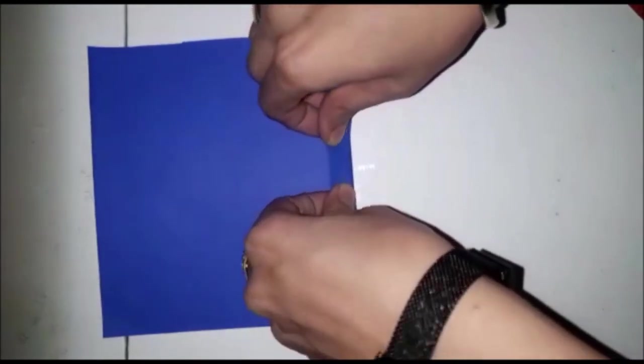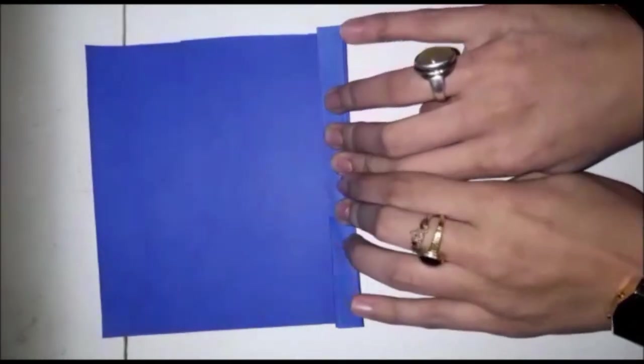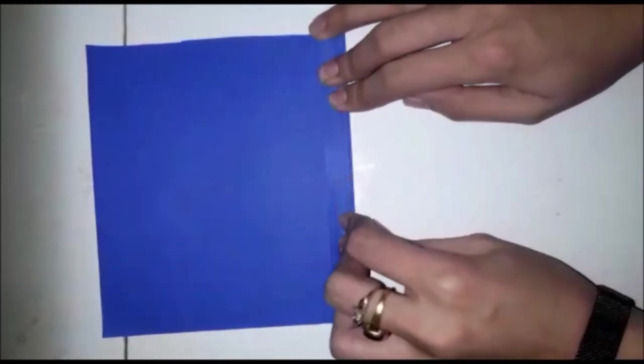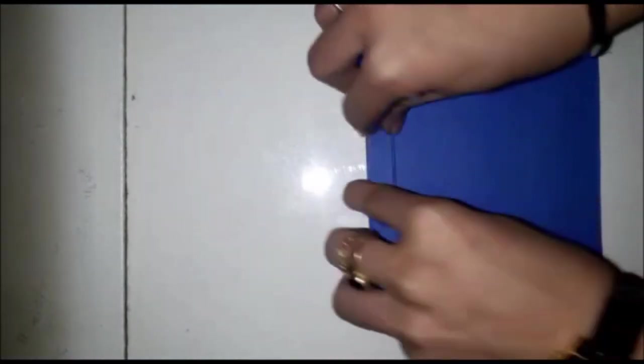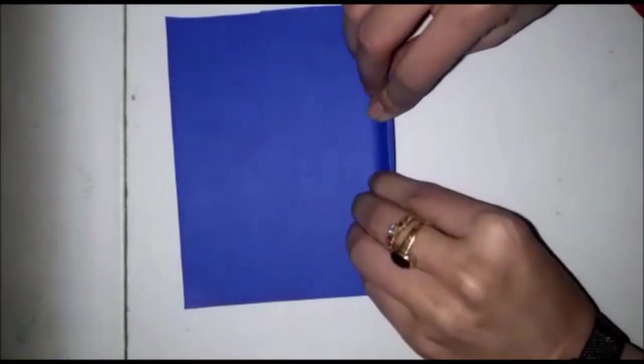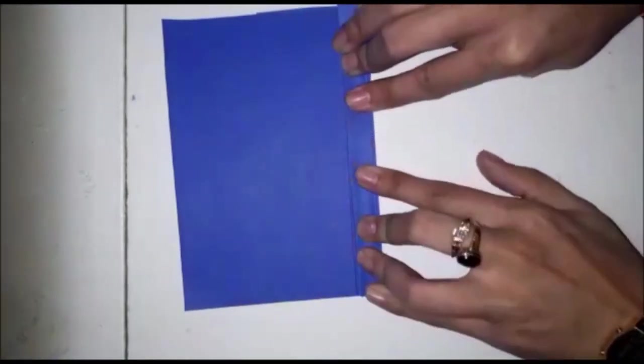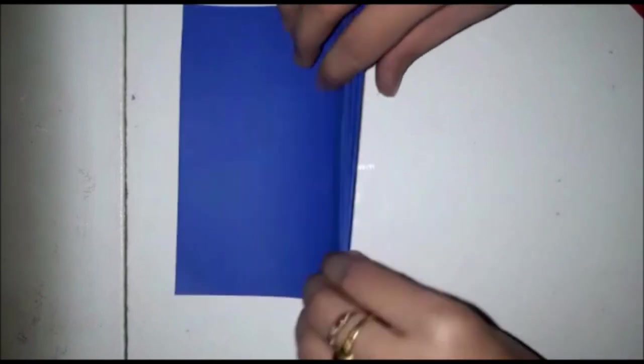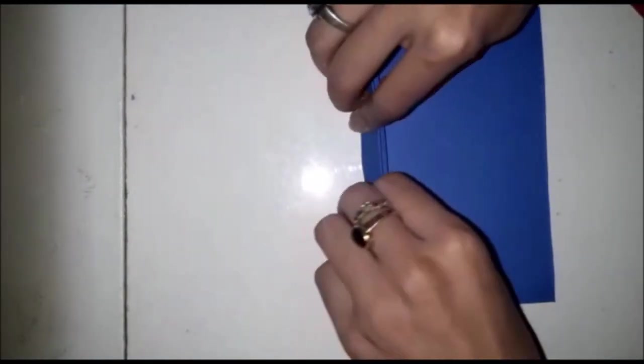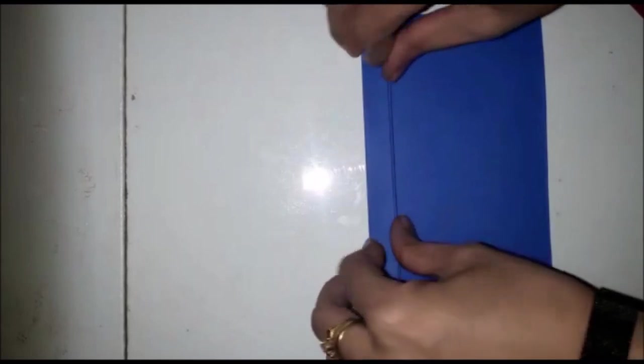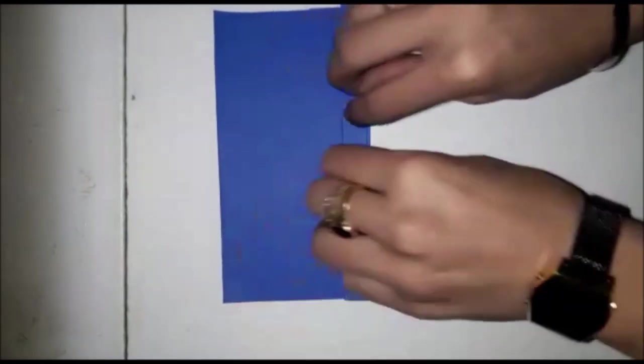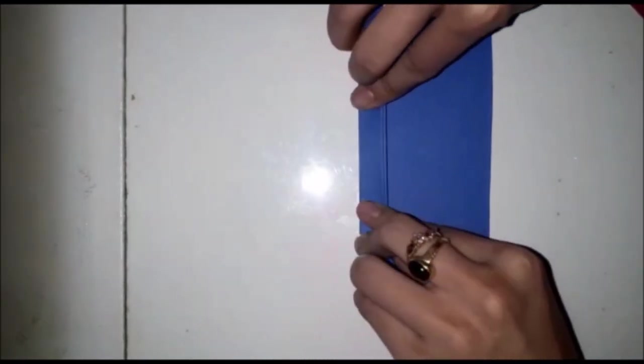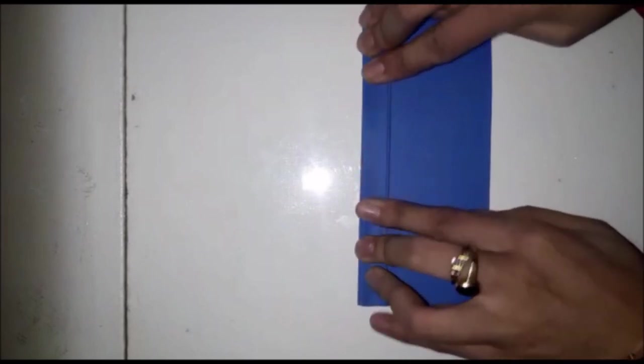And again, do this children, do it yourself. This is really good for your finger, really good for your fine motor skills. Fold it, press it every time. Fold it and press it. Once again, fold it and press it. Turn left side, fold this side and press it carefully. Fold it and press it, again fold it and press it.